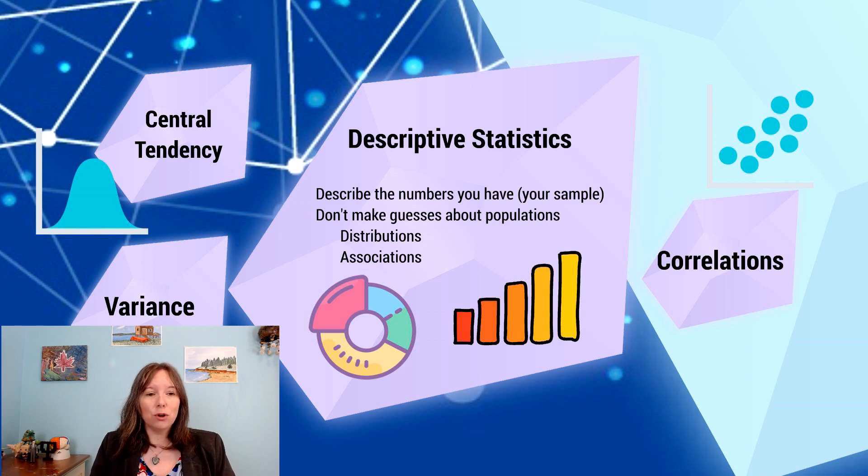A distribution, shown on the left with the bell curve, is the idea that we're looking at one variable. Imagine we measured reaction time in a sample of 100 people. We might find some people score very low, they have the slow reaction time, and some people score really fast, and some people are in the middle.